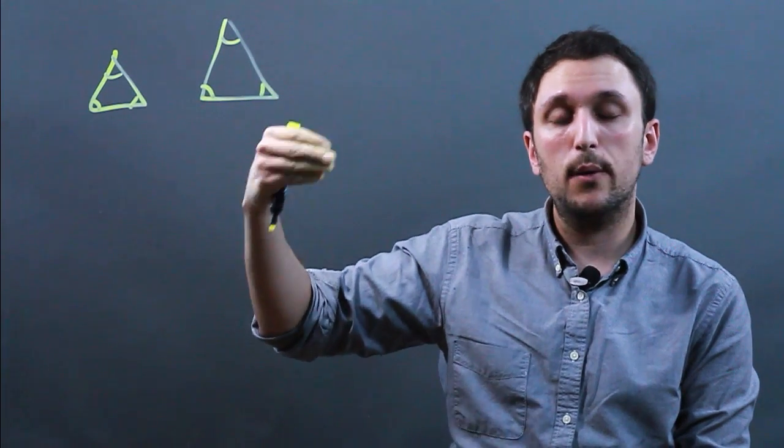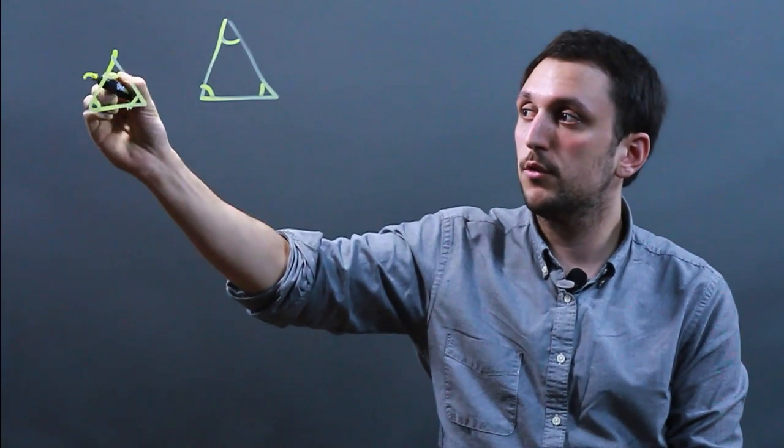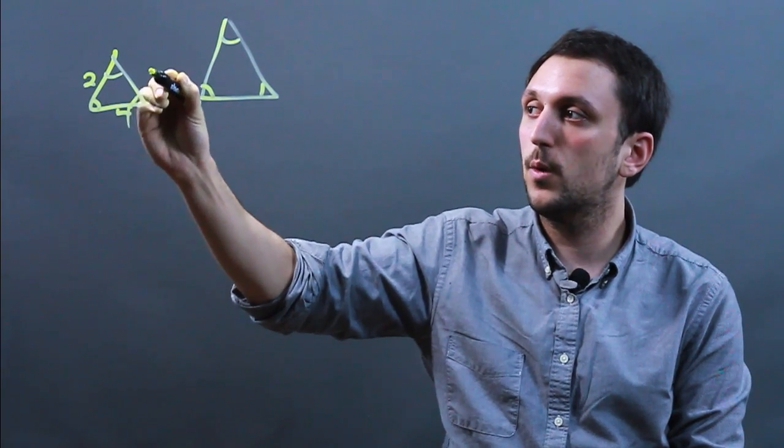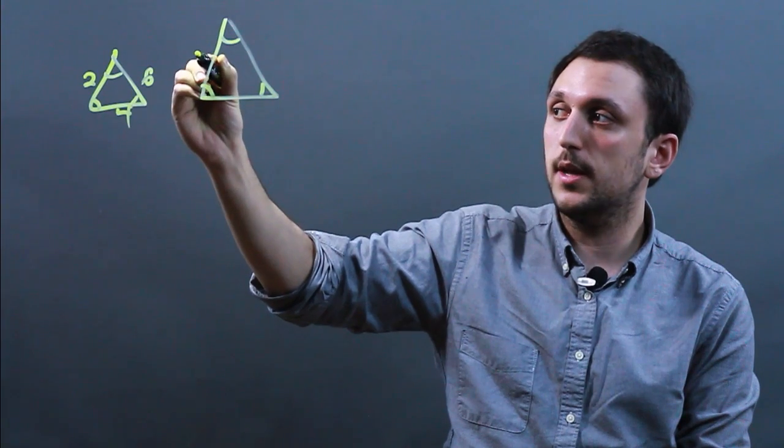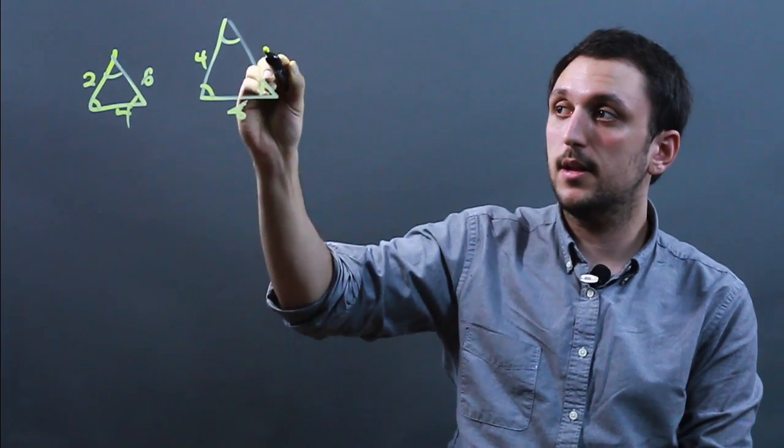Now, their sides do not have to be equal, however, they do have to be proportional. So if this is 2, and this is 4, and this is 6, then this could be, say, 4, 8, and 12,